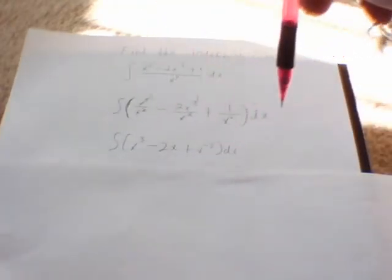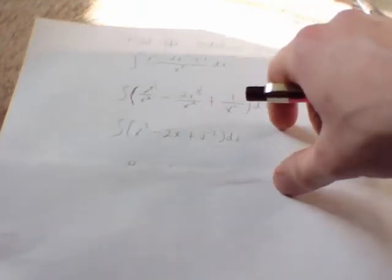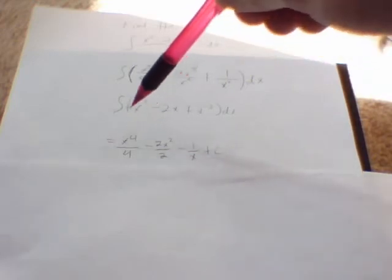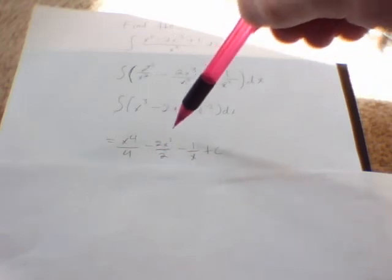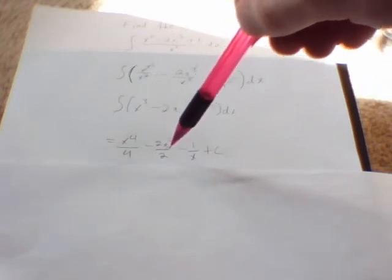You're going to simplify it down more and then take the antiderivative. The first one is going to go to x to the fourth divided by 4 minus 2x squared over 2 minus 1 over x plus c.